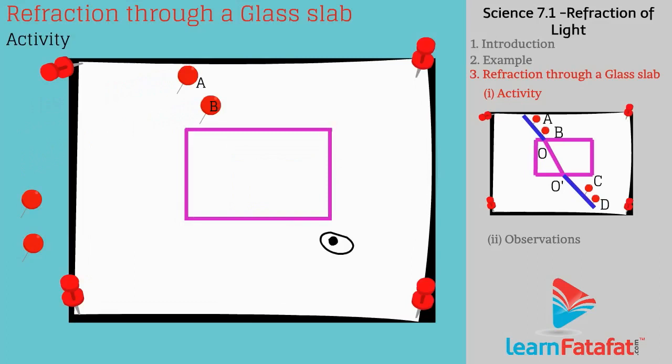Now looking from opposite edge, place the other two pins C and D on the paper such that all four pins comes in one line. Obtain a sketch of ray propagation.